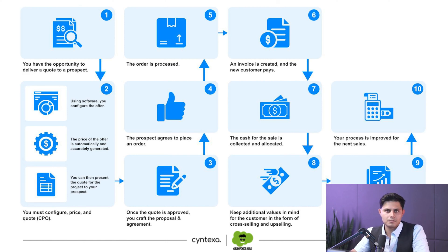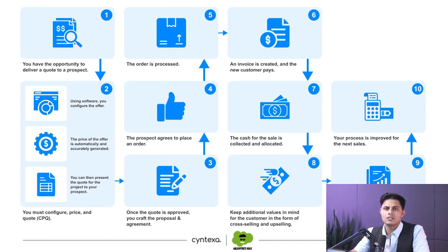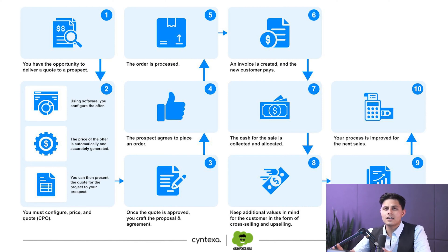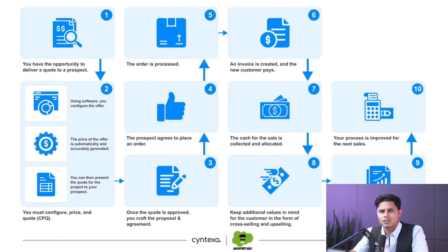You get an approval to place an order, process the order, and after processing it the invoice gets created. The new customer pays for that, and there is an opportunity for a payment gateway integration — one platform for that is Charge On.